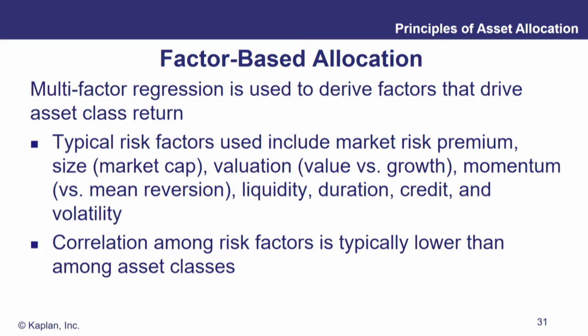Value stocks tend to outperform growth stocks in the data, so we can create a risk factor for that. We can also look for a factor for momentum and reversals, and then we can also include some other things from the bond market — liquidity, duration, credit, volatility — whatever risk factors we want to put in there.